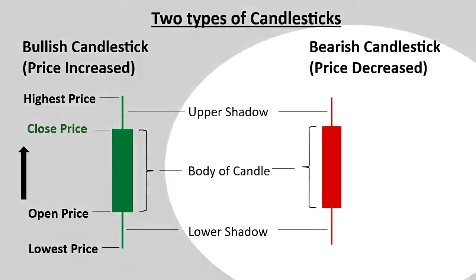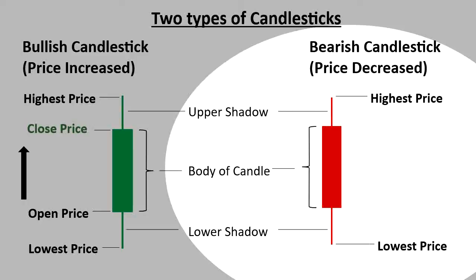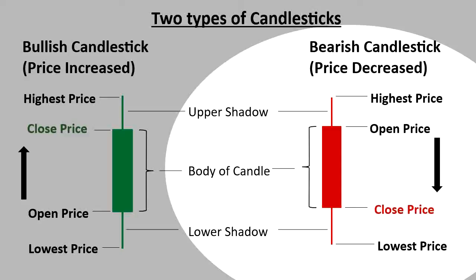Now let's take a look at the bearish candle on the right — the red candle. It also has the highest price at the top of the upper shadow and the lowest price at the bottom of the lower shadow. Then it has the closing price at the bottom of the body and the open price at the top of the body. The closing price is lower than the open price, so the prices are trending down, and that's what makes it a bearish candlestick.